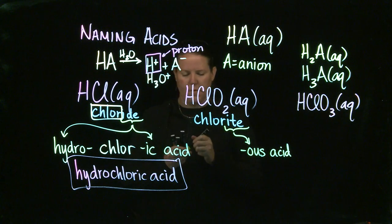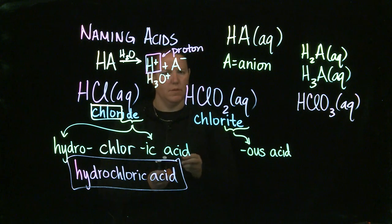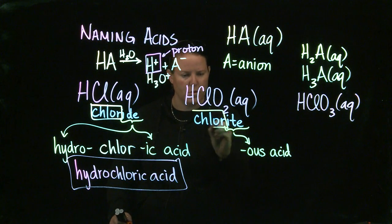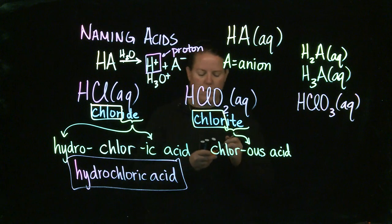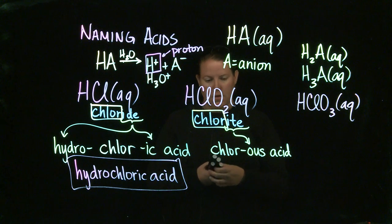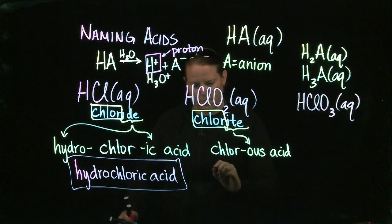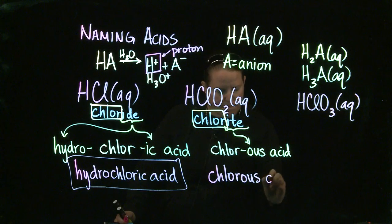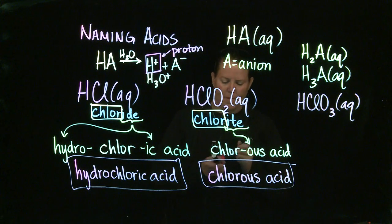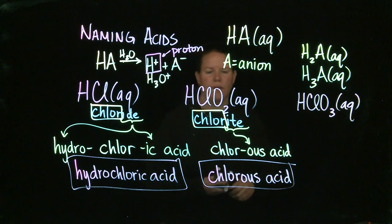ITE endings in acid naming give rise to only a suffix and then the word acid afterwards. What goes in front of that suffix? Well, the stem, which you notice hasn't changed. Everything before the '-ite.' So this becomes chlorous acid.